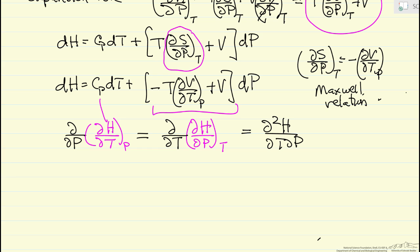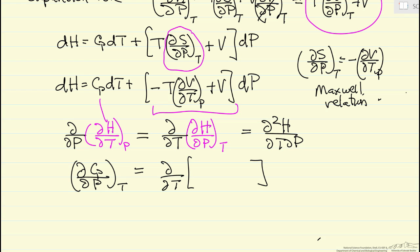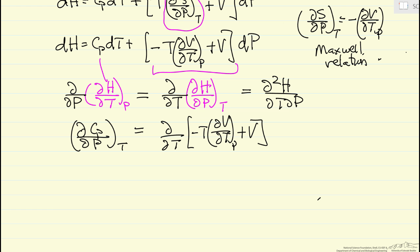So that means we now have an expression: the partial of Cp with respect to pressure at constant temperature — which is what we originally set out to solve for — equals the partial with respect to T of the bracketed term. This is just saying the second derivatives are equal. So now I can start differentiation, and I'm going to have to use the chain rule.